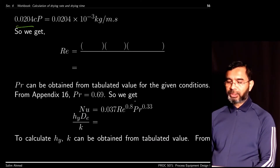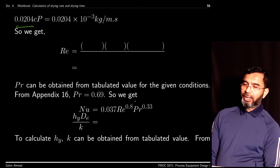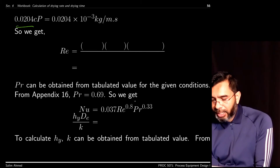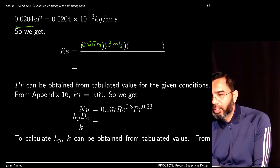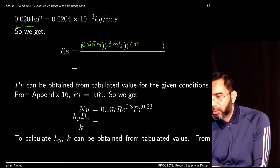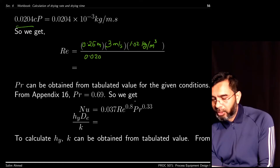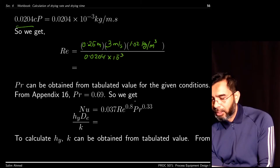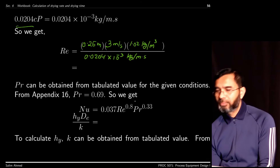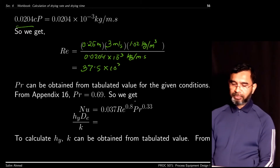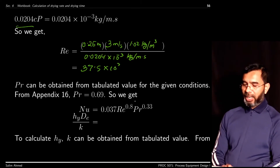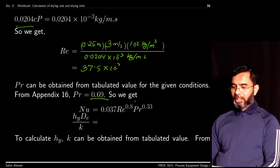Plugging in these values into the Reynolds number equation — De = 0.25 m, v = 3 m/s, ρ = 1.02 kg/m³, μ = 0.0204 × 10⁻³ kg/(m·s) — we get Re = 37.5 × 10³. The Prandtl number can be obtained directly from air property tables for the given conditions, giving Pr = 0.69.